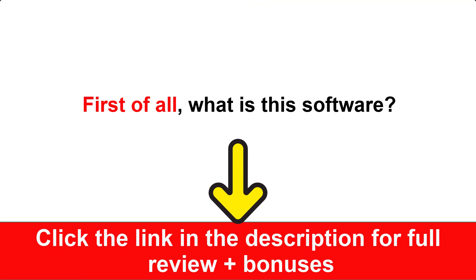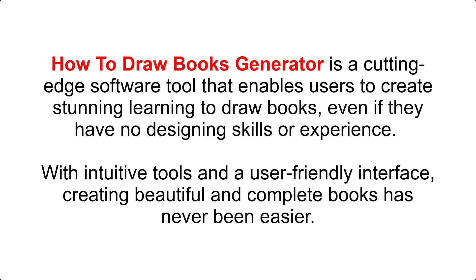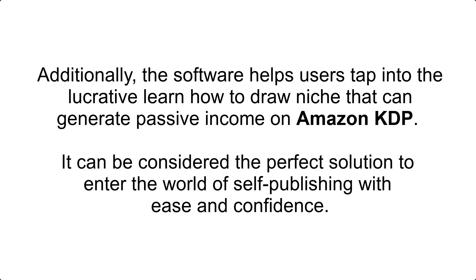What is this software? How to Draw Books Generator is a cutting-edge software tool that enables users to create stunning learning-to-draw books, even if they have no designing skills or experience. With intuitive tools and a user-friendly interface, creating beautiful and complete books has never been easier. The software helps users tap into the lucrative learn-how-to-draw niche that can generate passive income on Amazon KDP, making it the perfect solution to enter the world of self-publishing with ease and confidence.